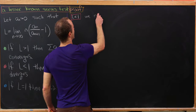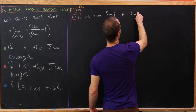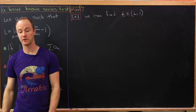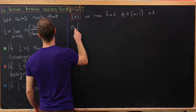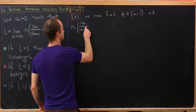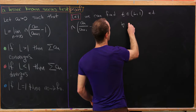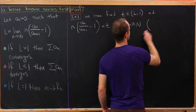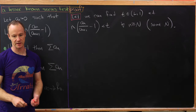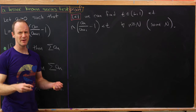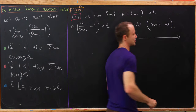Since l is less than one, we can find a number t on the interval from l to one such that the terms of our sequence — meaning n times (a_n over a_{n+1} minus one) — is less than t for all n greater than or equal to some capital N. This capital N depends on how close t is to the limiting value, and this is related to the proper definition of the limit.